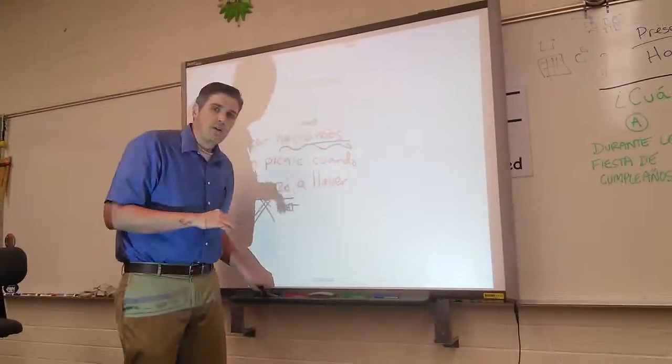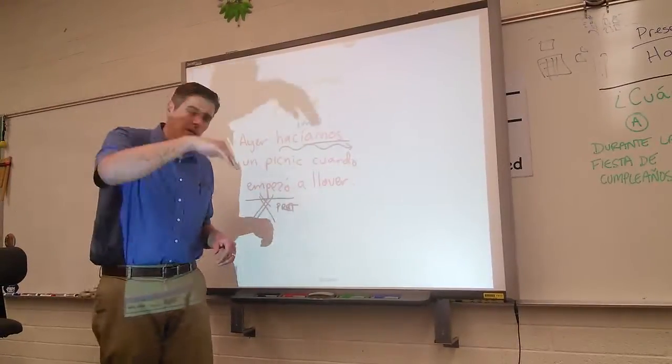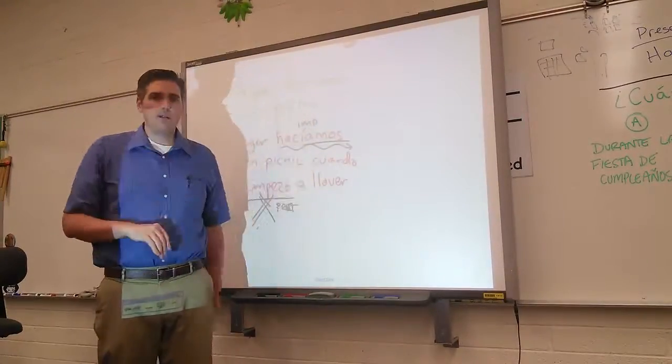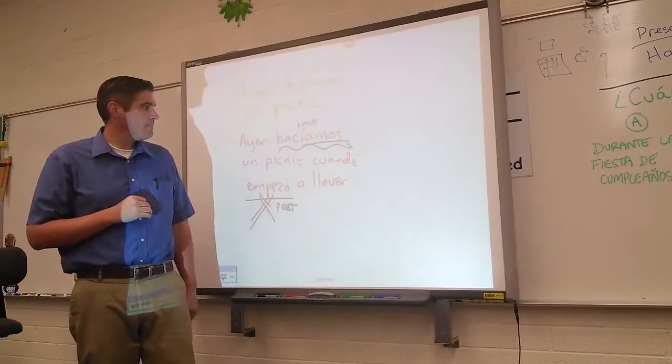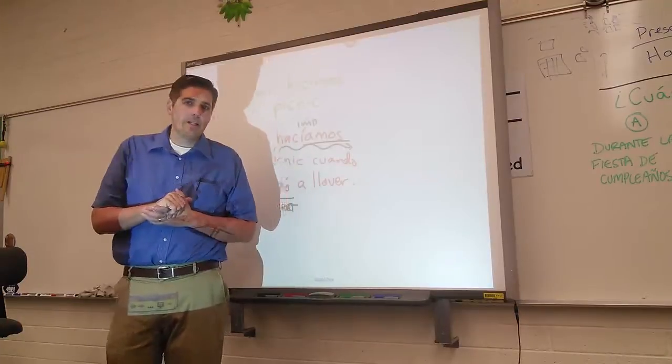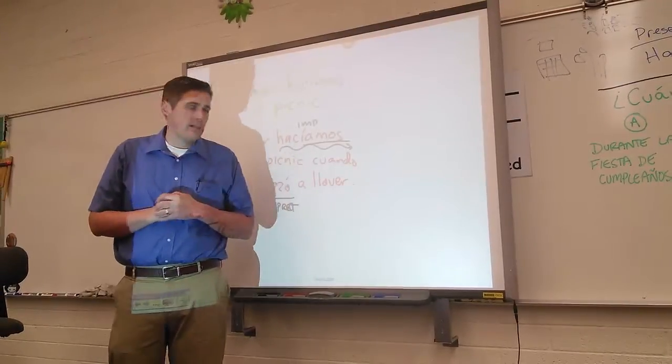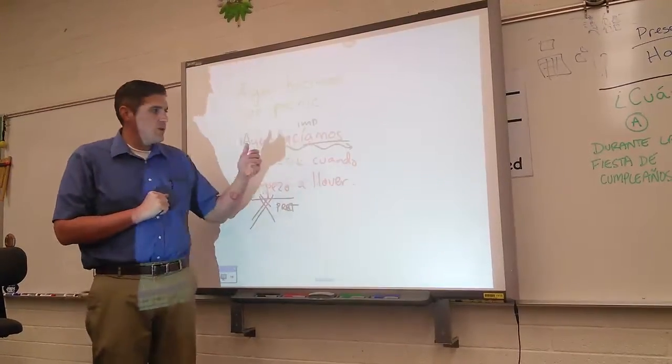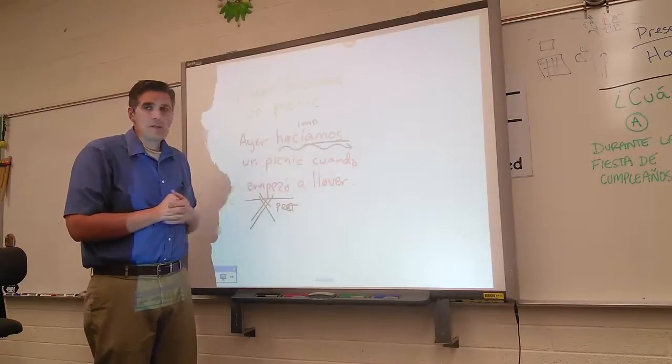So here is the case where we're using something that's going on, imperfect, when BAM! something else happens, preterite. That's the main point we want to get across in this lesson is that you can use the preterite and imperfect together. Describe a situation, something that was going on when something else happened.